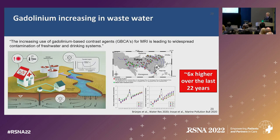The other issue is gadolinium. We've been very successful with MR and growing the number of scans, but we're also growing the amount of gadolinium we put into the wastewater. The increasing use of gadolinium-based contrast agents for MRI is leading to widespread contamination of fresh water and drinking systems — a six-fold increase over the last 24 years.